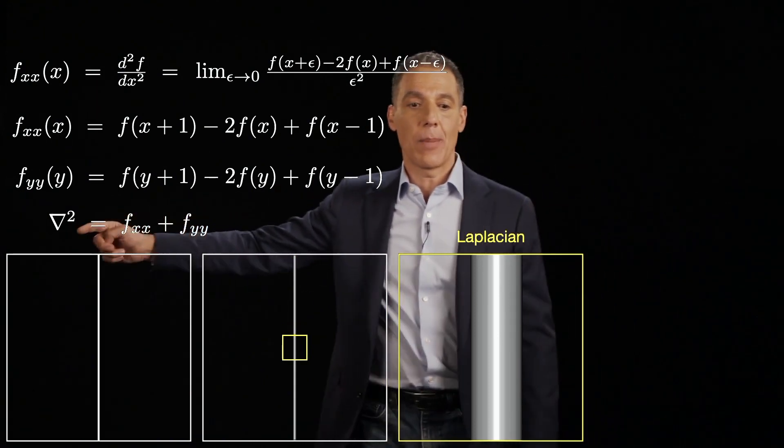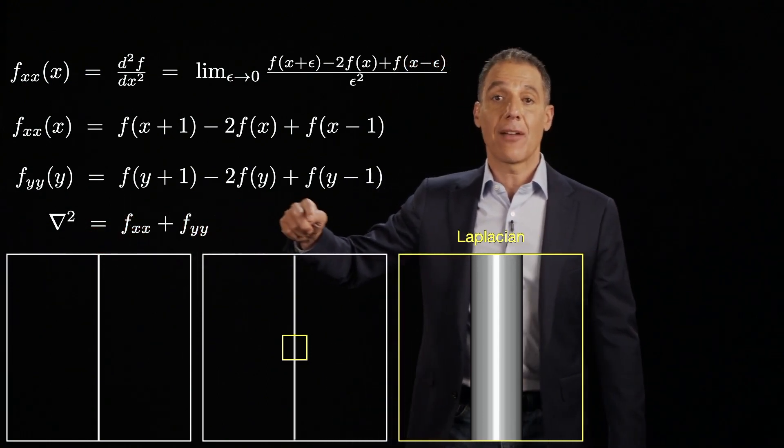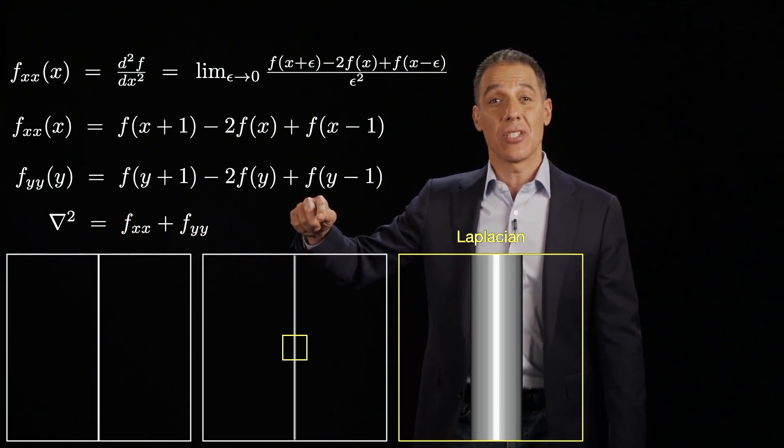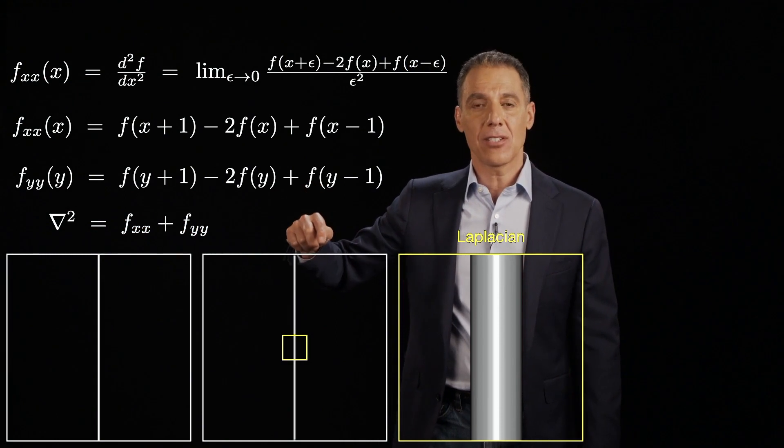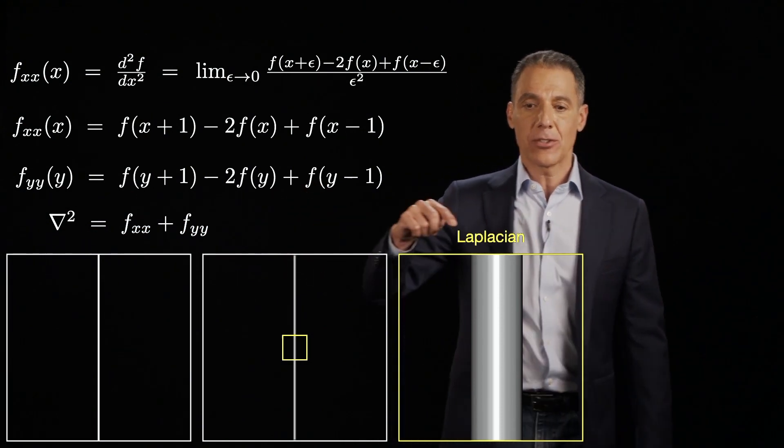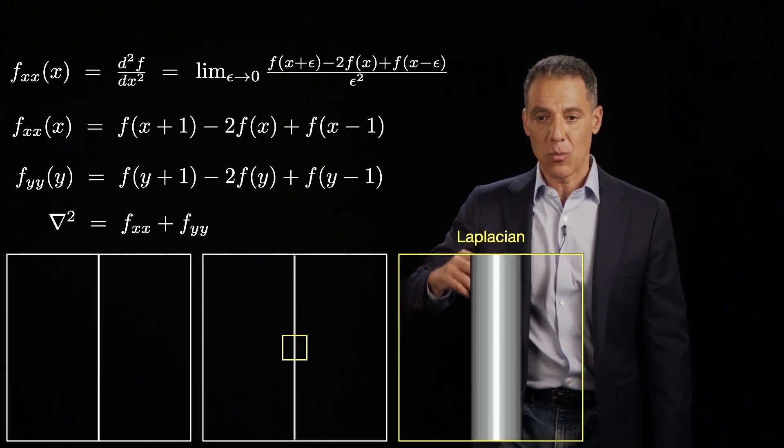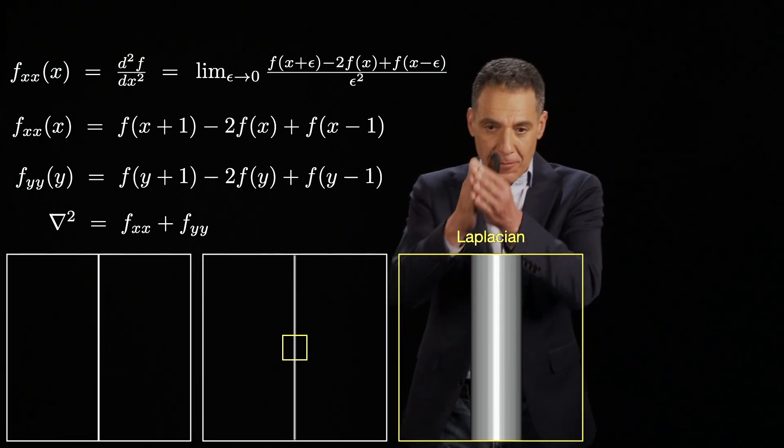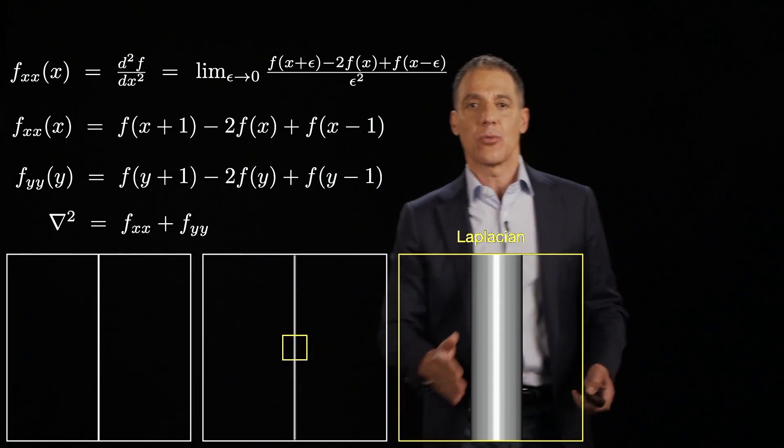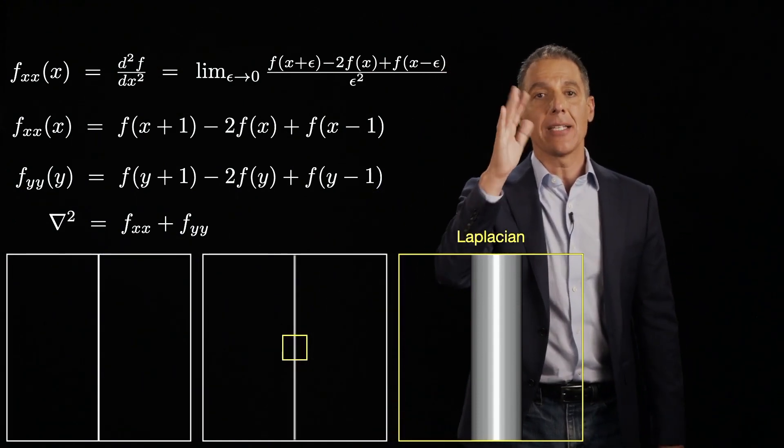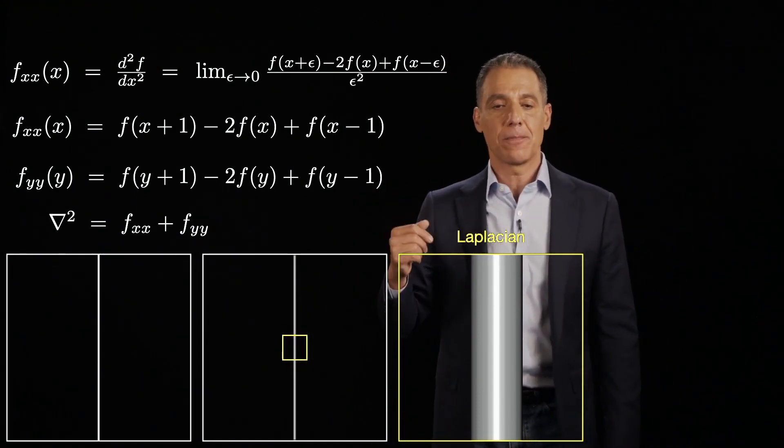And that is going to give me, so let's go back. Here's the original image. Here is now the Laplacian, which is the sum of the second directional derivatives. And here's a magnified view of that. And now you see something really nice. You see one strong response in the center, and then it fades off as I go away, which is representing that I found a line and not an edge.